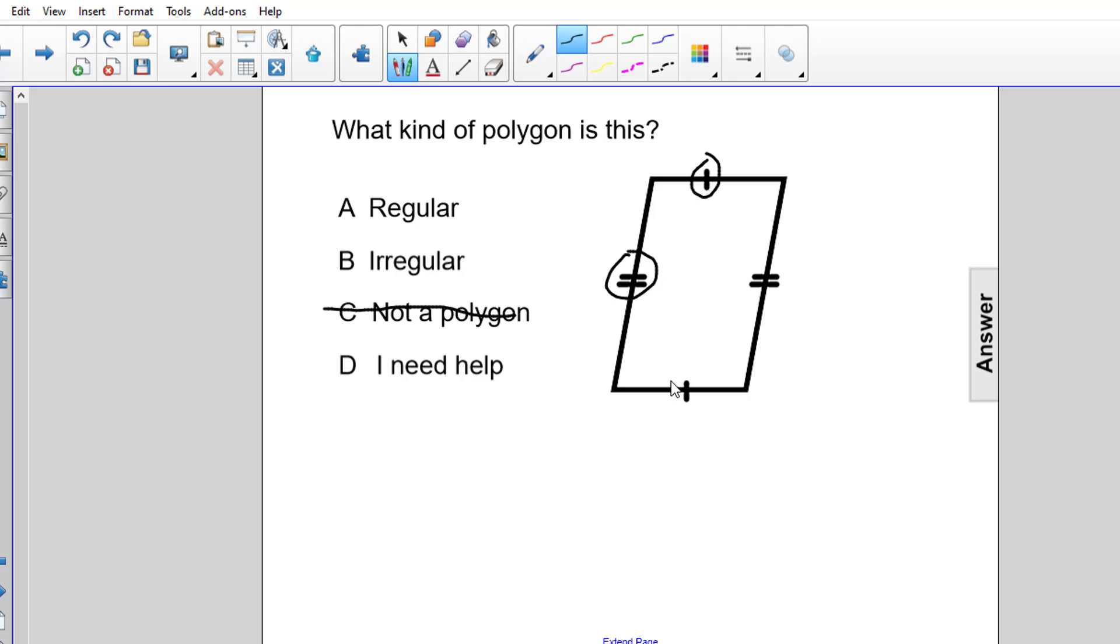Now it is true that opposite sides are congruent. The top is congruent to the bottom, the left is congruent to the right, but for it to be a regular polygon all the sides have to be congruent.